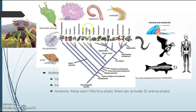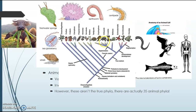Instead, there are actually 35 animal phyla. Here's an image, and if you look at that, you'll see here's the chordates — or what we traditionally think of as the vertebrates. They only make up one little phyla of all this other variety of life. Let's start to learn about some of them. We're not going to learn all 35 — we're just going to learn about nine of them.